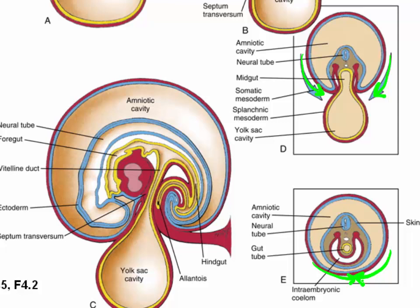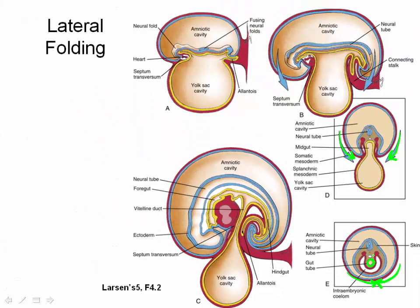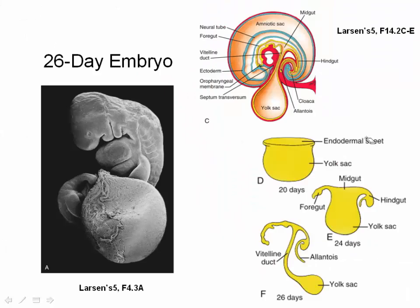Also note how lateral folding has transformed the endodermal layer into a tube, marking formation of the gut tube. This slide reiterates the effect of the two folding events on the endoderm. The figure illustrates how the flat intraembryonic sheet of endoderm transforms into a gut tube with foregut, midgut, and hindgut regions, with the yolk sac remaining attached to the midgut through the vitelline duct.